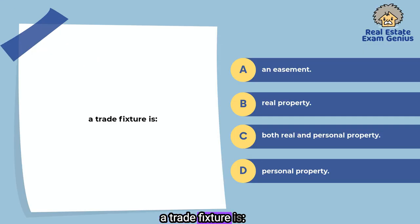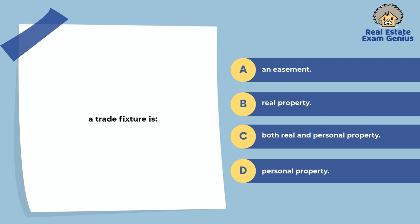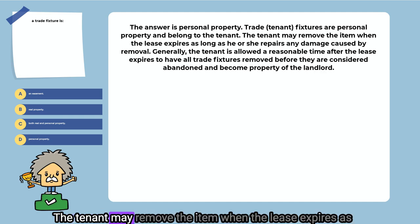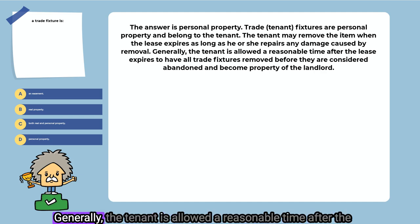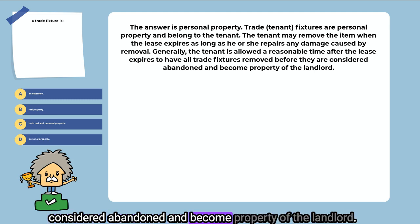A trade fixture is: an easement, real property, both real and personal property, or personal property. The answer is personal property. Trade fixtures are personal property and belong to the tenant. The tenant may remove the item when the lease expires as long as he or she repairs any damage caused by removal. Generally, the tenant is allowed a reasonable time after the lease expires to have all trade fixtures removed before they are considered abandoned and become property of the landlord.